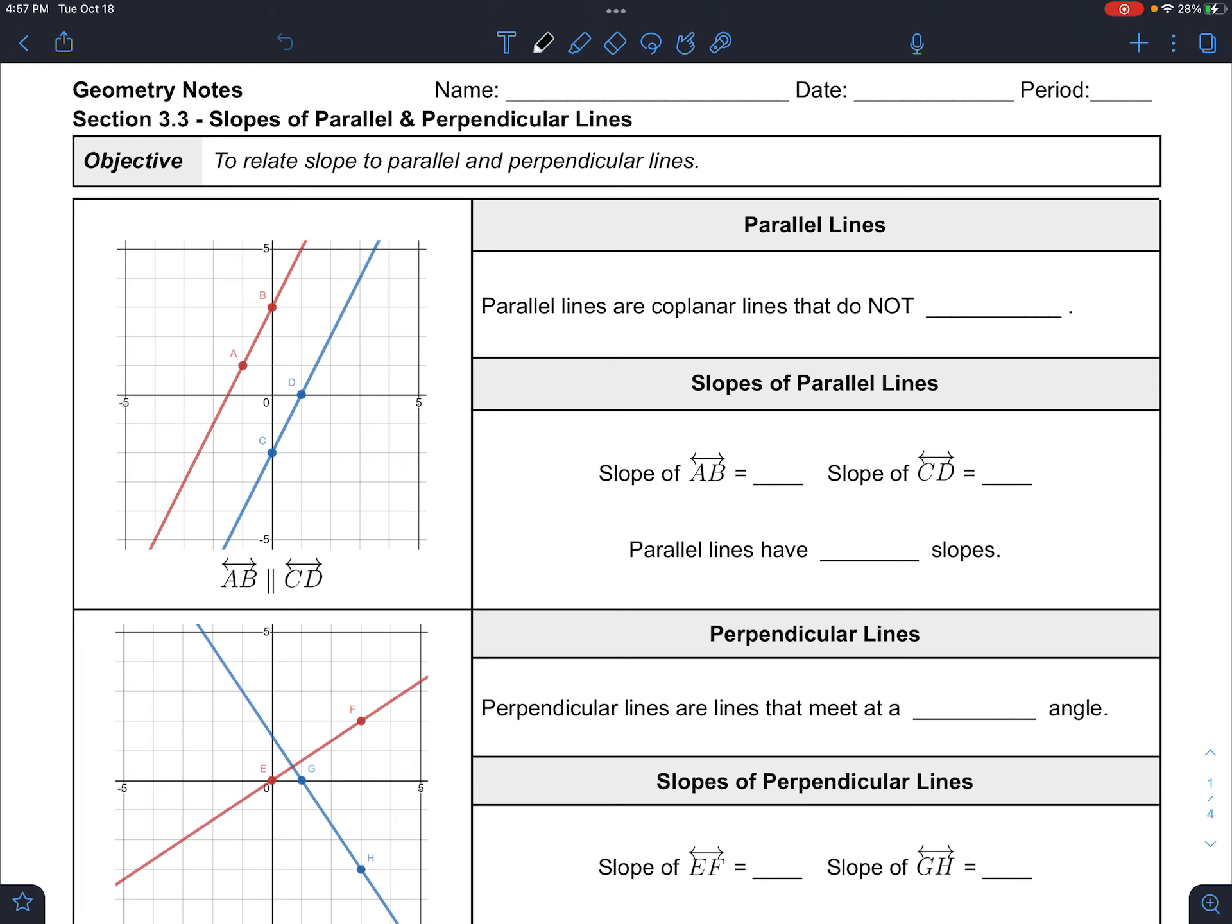All right, so let's wrap up unit three with parallel and perpendicular lines. Seen them before, but we haven't seen them on a plane. Okay, so we're going to go over some of the observations and facts about this.